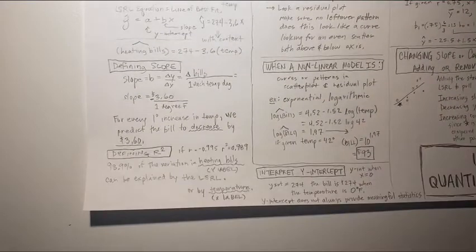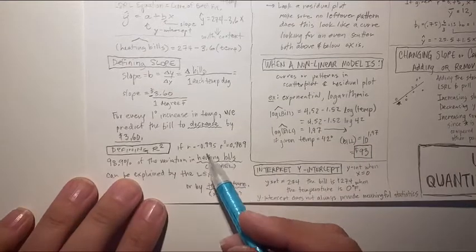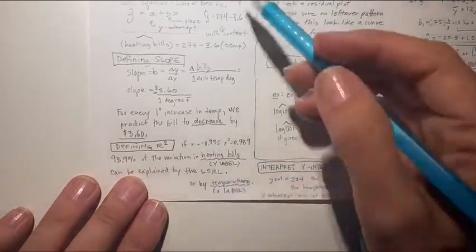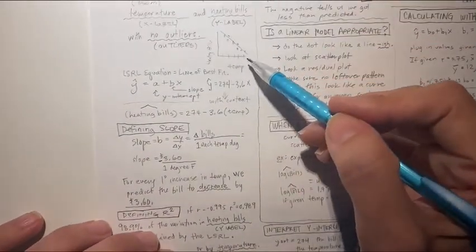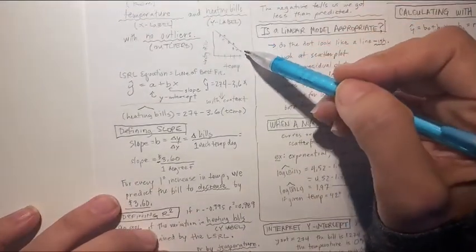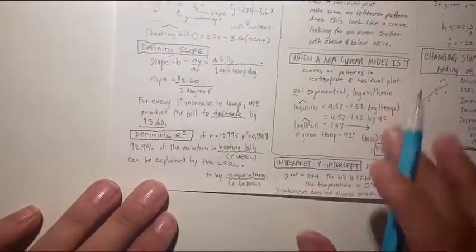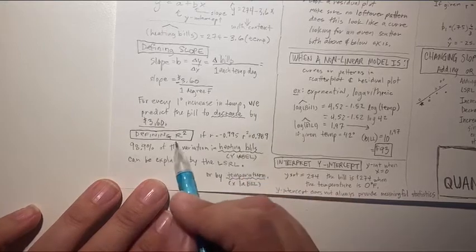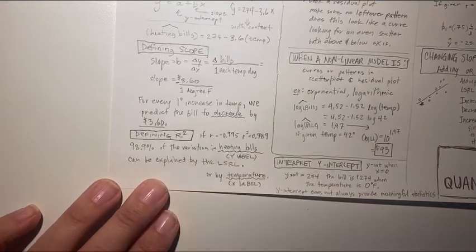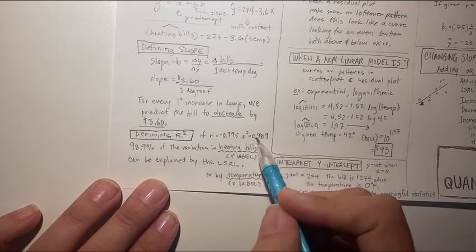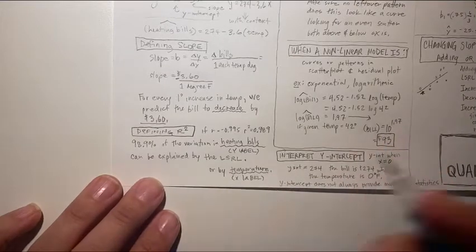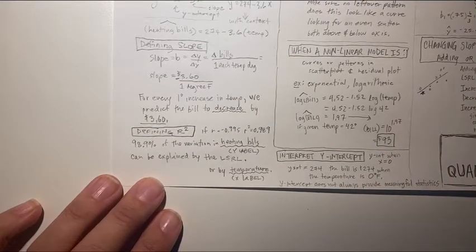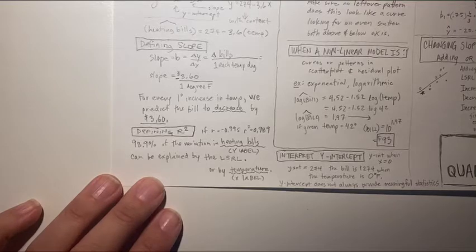Now they could also ask us to define R squared. So if provided the value of R, notice R here is negative because we do have a negative slope. So R tells us how close the dots are to the line, and if it's negative, it's telling us that the dots are making a pattern that's going down. This is our correlation factor. Now if I have to define R squared, our coefficient of determination, we square this number, and notice when you square a negative, you get a positive.